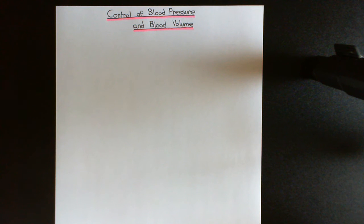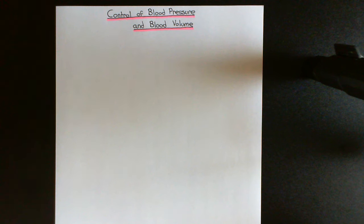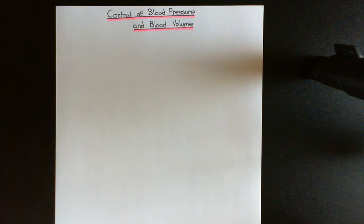Then we'll actually begin going through the homeostatic mechanisms the body has for controlling blood pressure and blood volume. We'll talk about the baroreceptor response for controlling blood pressure short-term, and then we'll talk about the renin-angiotensin-aldosterone system for controlling blood volume, and thereby blood pressure more long-term.